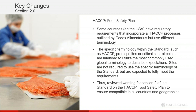In Section 2, the HACCP/Food Safety Plan: wherever you see HACCP within Issue 8, there will be a slash or 'and food safety plan.' This is because some countries, for instance the US, have regulatory requirements that incorporate HACCP processes outlined by Codex Alimentarius but use different terminology, like 'preventive controls.' The specific terminology within the standard — such as HACCP, prerequisites, and critical control points — is intended to utilize the most commonly used global terminology. Sites are not required to use this specific terminology but are expected to fully meet the requirements.